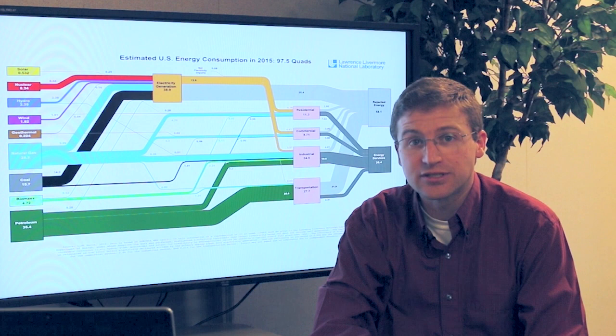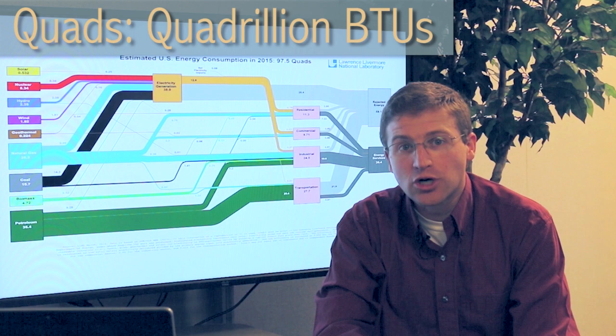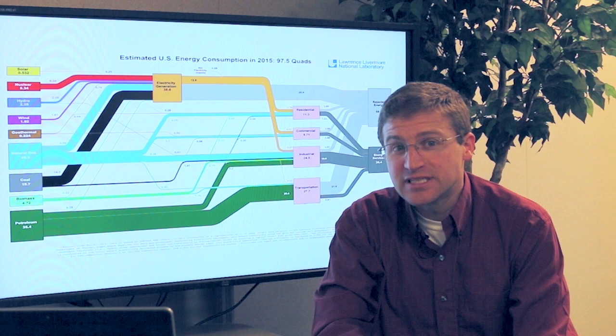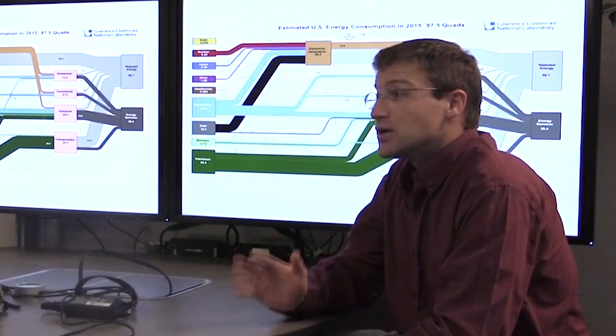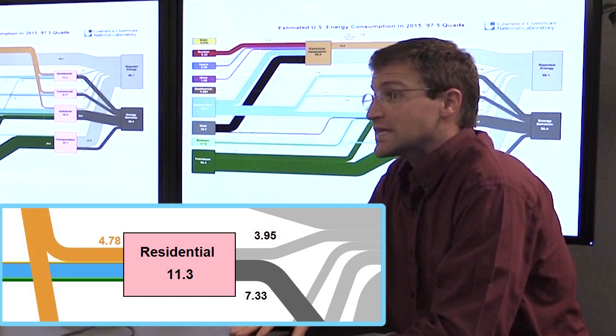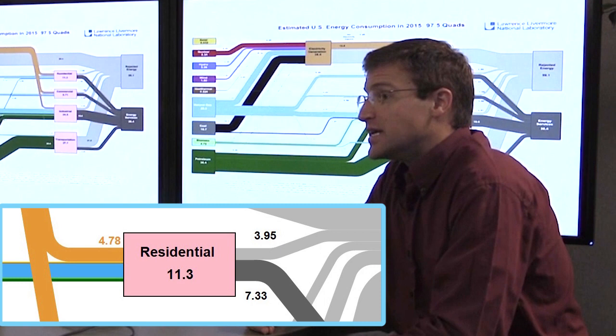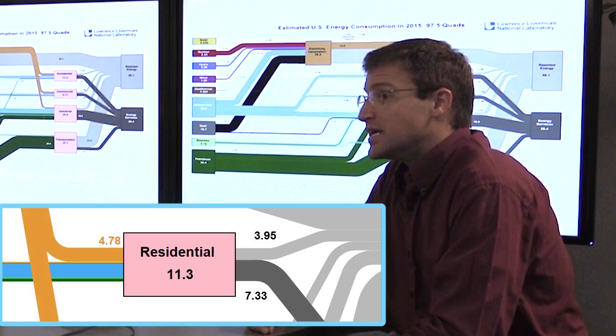All of the statistics reported on this flowchart are in quads, which are quadrillion BTUs. As a matter of scale, 3,600 BTUs is about a kilowatt-hour—you probably pay between 10 and 15 cents for that on your electric bill. Of the 11 quadrillion BTUs of energy used in homes, each person uses about 36 million.